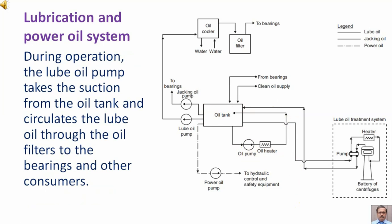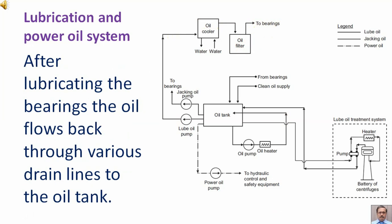During operation, the lube oil pump takes suction from the oil tank and circulates the lube oil through the oil filters to the bearings and other consumers. After lubricating the bearings, the oil flows back through various drain lines to the oil tank.